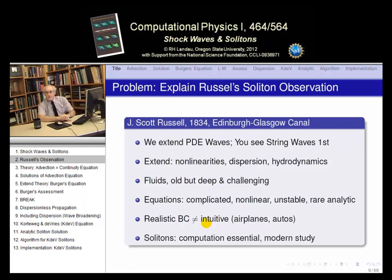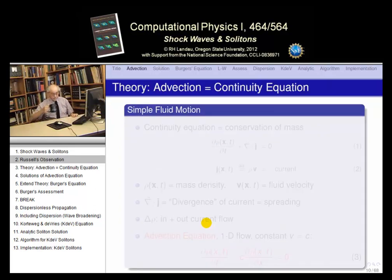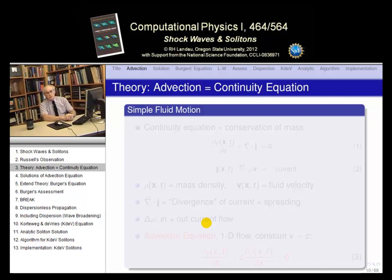Solitons is one of the subjects for which modern computation was essential to understand. Their discovery was made experimentally by Russell, and even later analytically, but it took modern computational power to achieve their full development. It's still a very interesting topic.